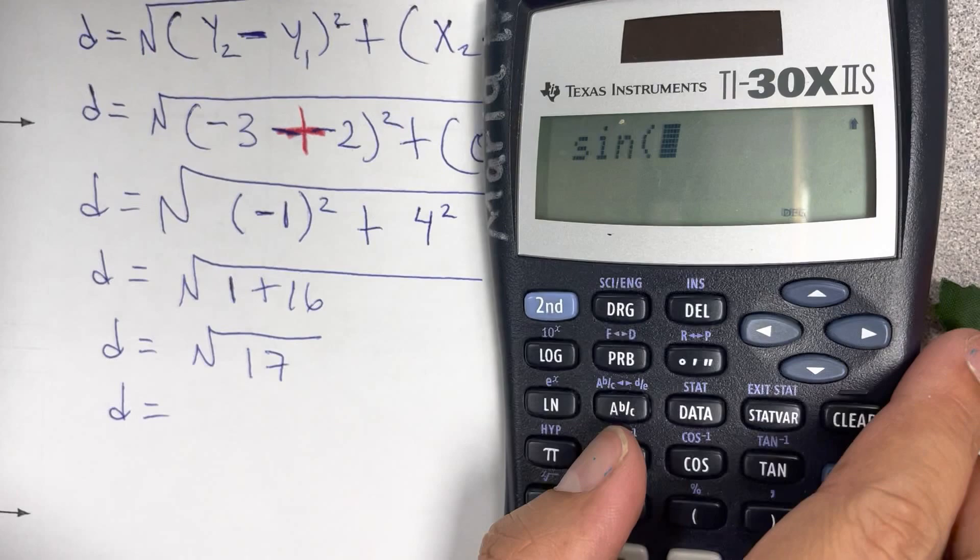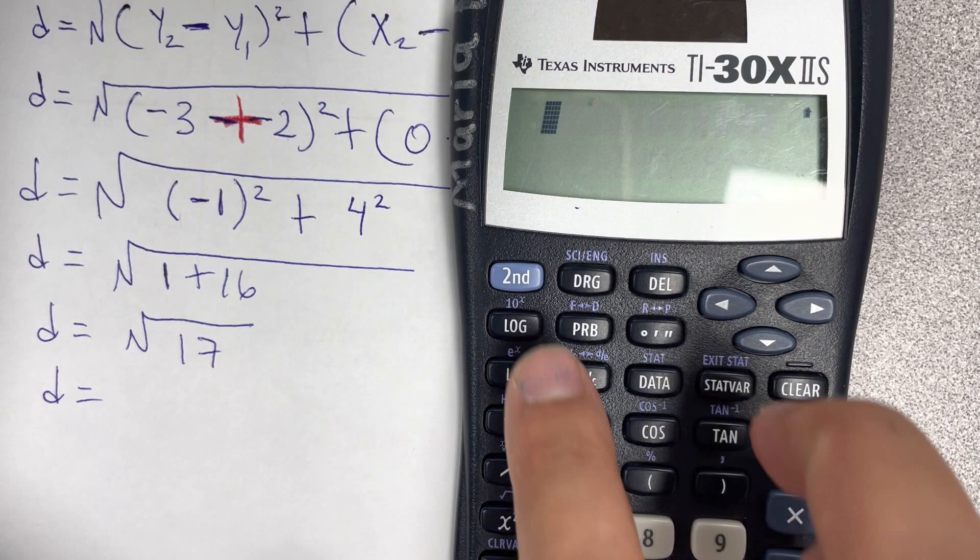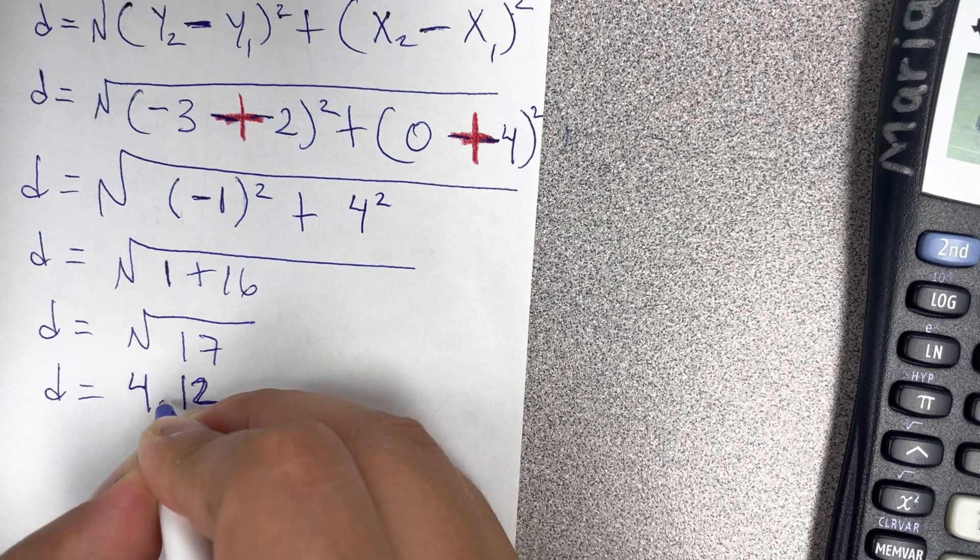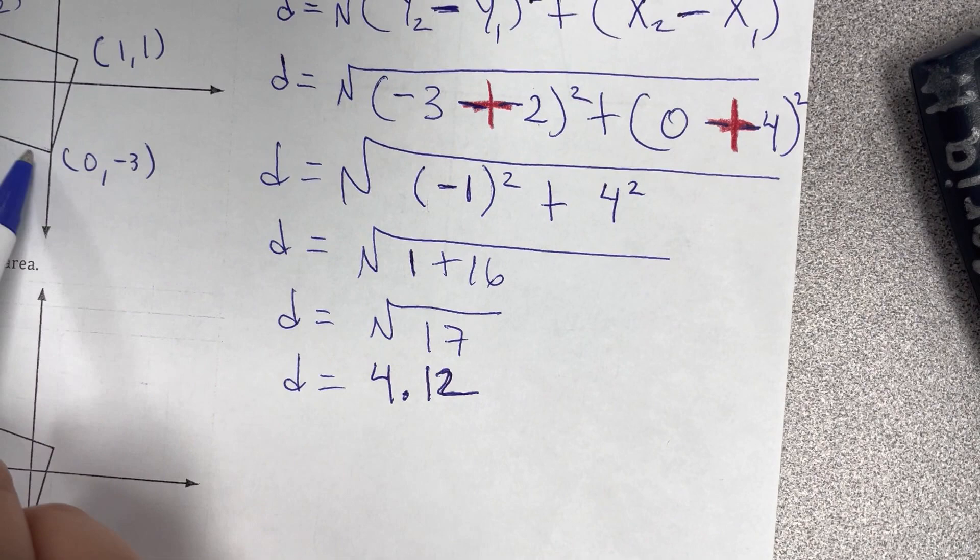In our calculator, we're going to find the square root of 17 is 4.1 or 4.12. Whatever you want to use, that's fine with me. Va a salir un poquito diferente, but that's okay. So, that's for this part right here. Ya encontramos esta parte. Ahora vamos a encontrar la otra.